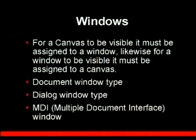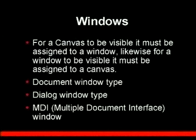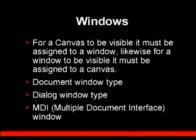These three are the three main types of canvases. A window is basically the frame of the form, and canvases are the different pieces of that frame. For a canvas to be visible, it must be assigned to a window. At the same time, for the window to be visible, it must have a base canvas.